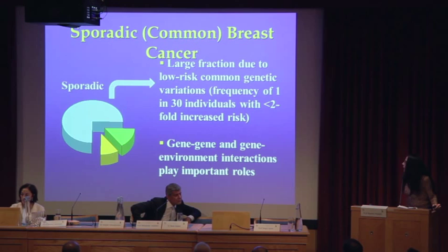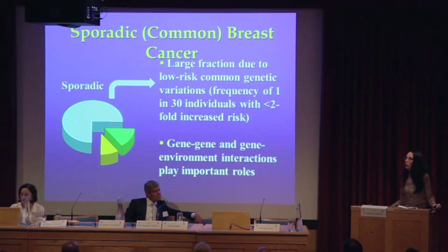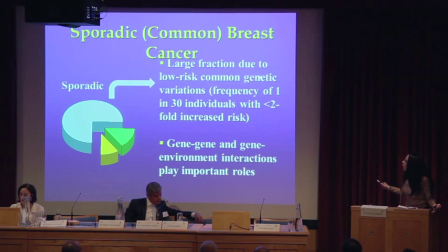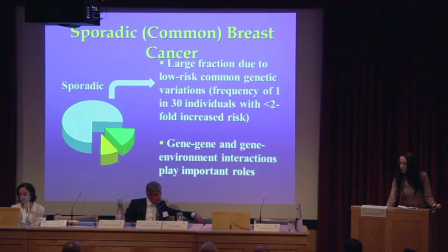We are also working on and hoping to expand our studies to sporadic or common forms of cancer in understudied populations that have already been worked up for hereditary breast cancer. We are finding that a large fraction of sporadic cases are in fact due to low-risk but common genetic variations, and that gene-gene and gene-environment interactions play significant roles.